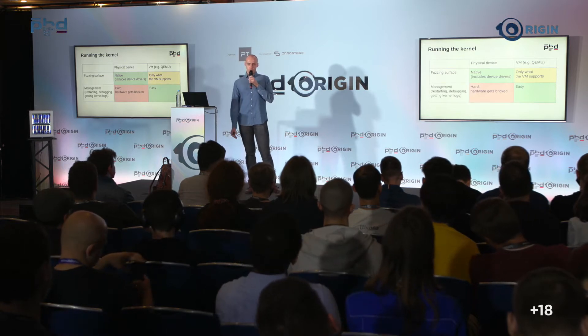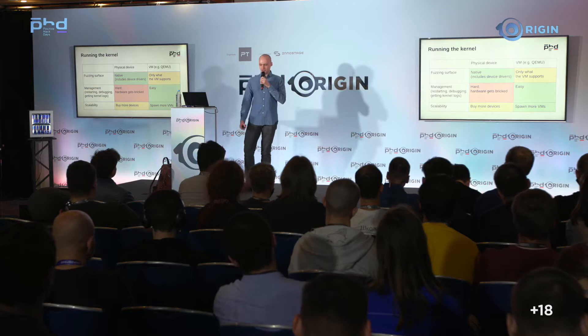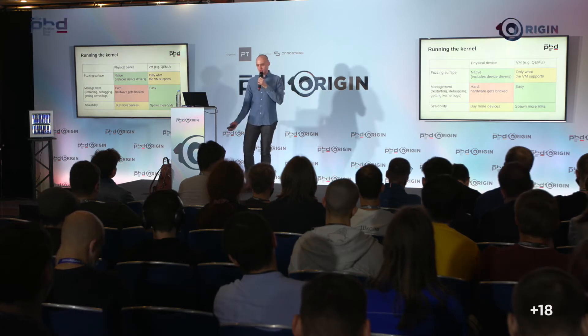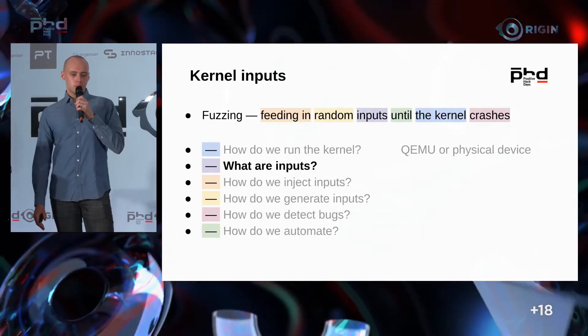With physical devices, it's more difficult to reboot, they can break if you use wrong firmware on the chip, and you need to find a serial port — which may not be trivial. In terms of scalability, VMs also win because it's enough to take a more powerful piece of hardware and run more VMs. If it's about a unique device, you may not be able to get more than one.